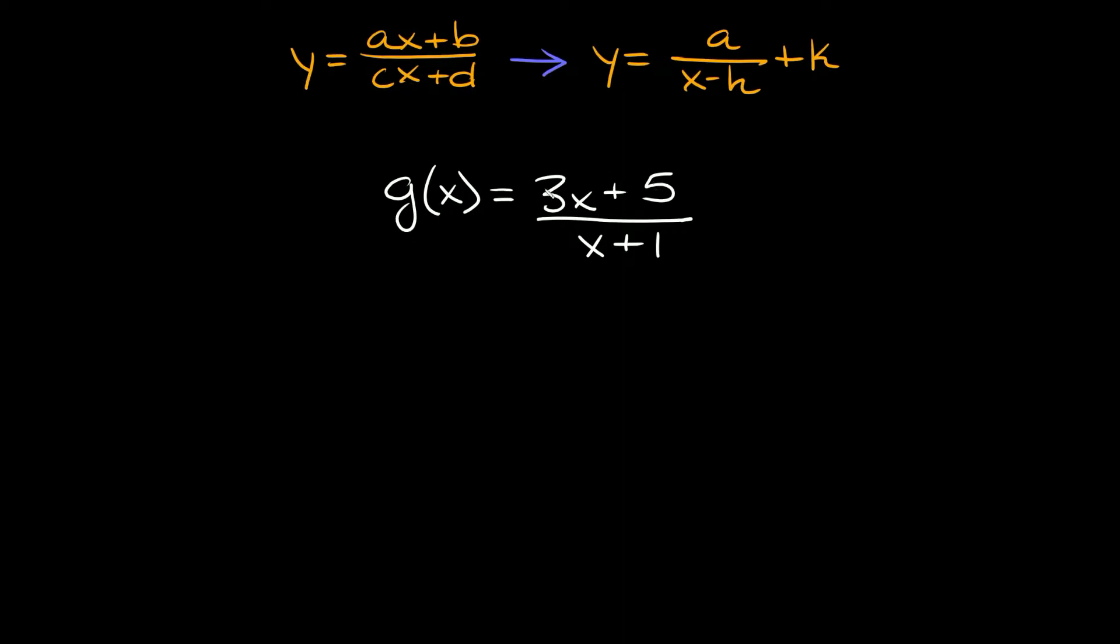Basically just take whatever's in the numerator so 3x plus 5 and we're going to divide that by what's in the denominator which is x plus 1. Now in order to divide these you just look at the first term and divide this into the very first term in here. So x divides into 3x exactly three times.